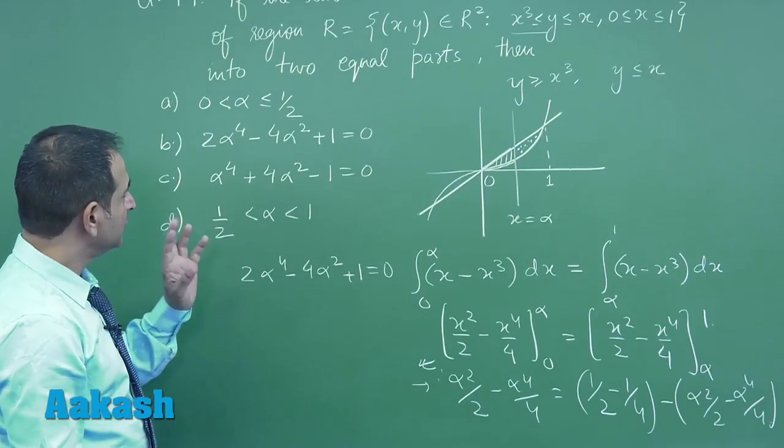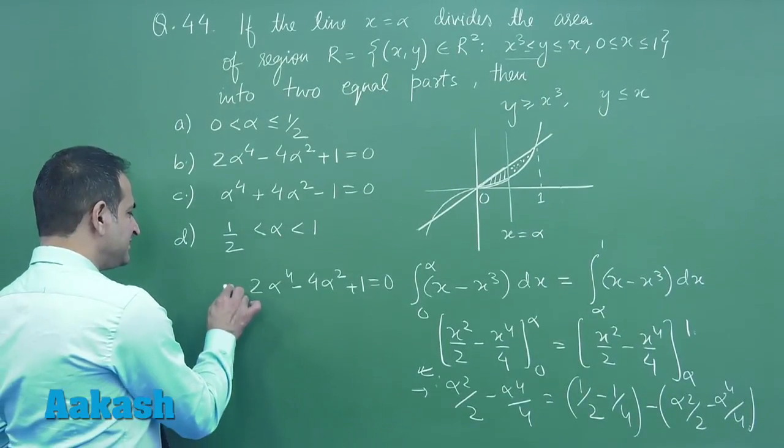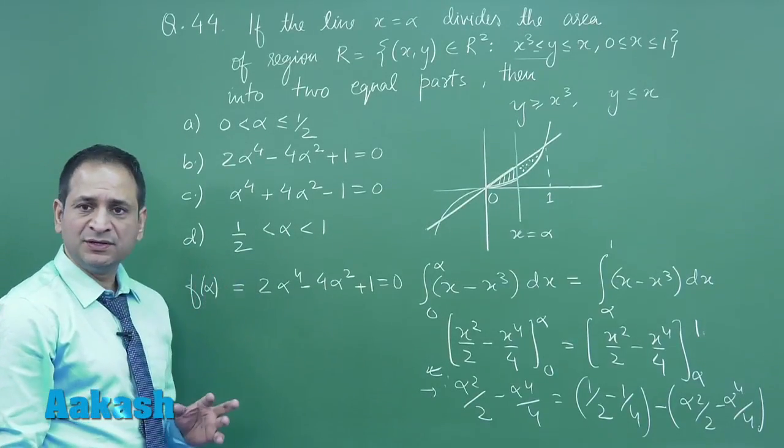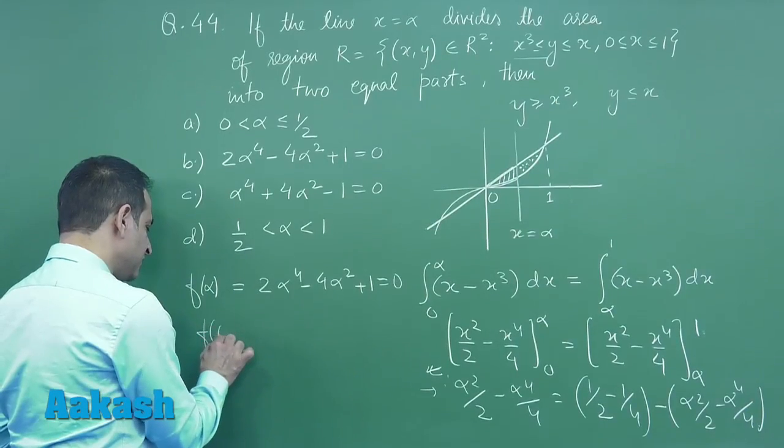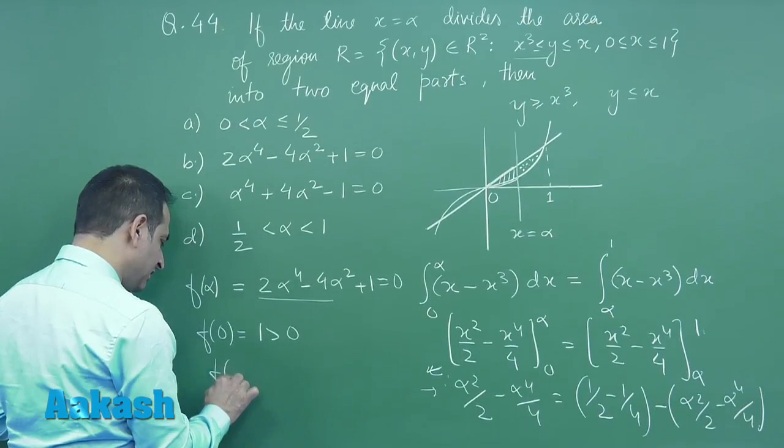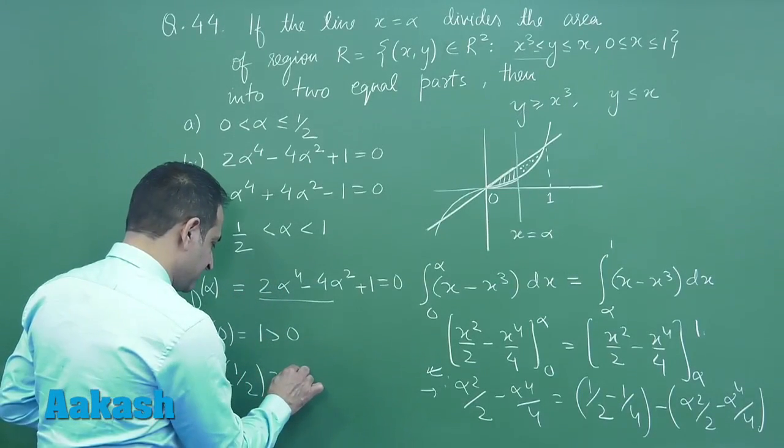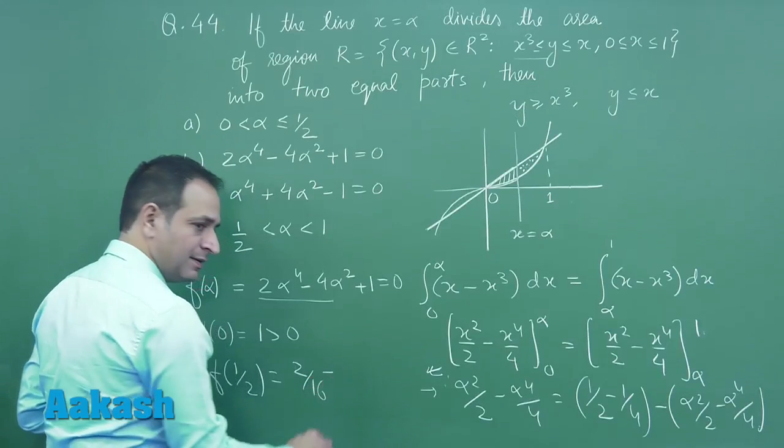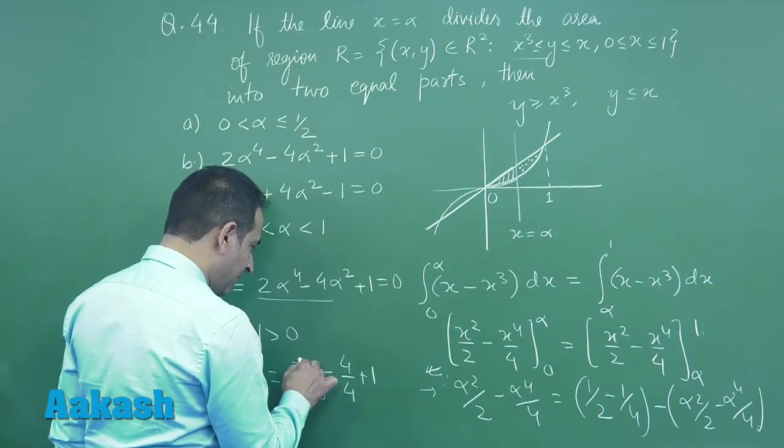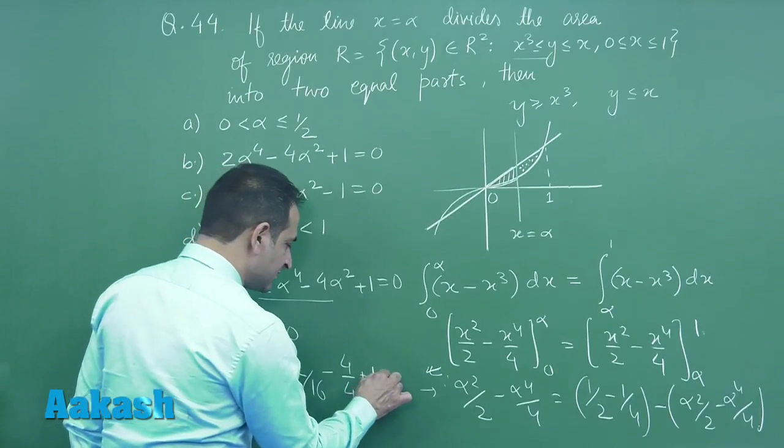So definitely we are getting the second option as the correct one. But we have to see for more options because it is having more than one option correct. So let us treat this as a function of α. Now we can calculate f(0), which is definitely equal to 1, which is greater than 0. And again, f(1/2) we can see from here is 2/16 - 4/4 + 1 which is 1/8, which is again greater than 0.